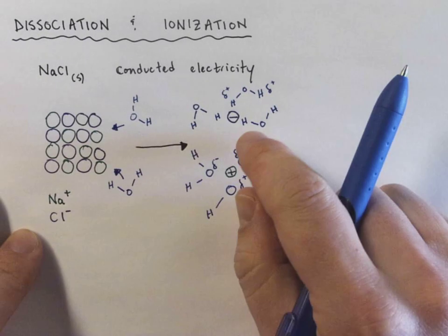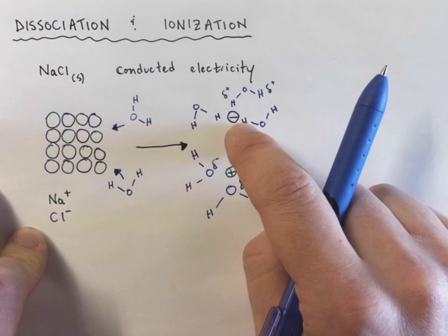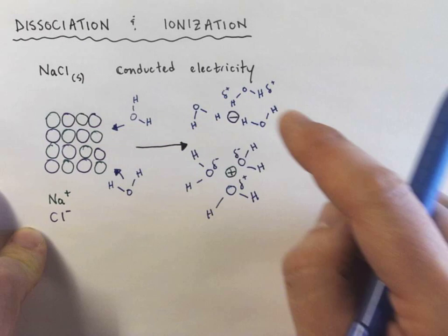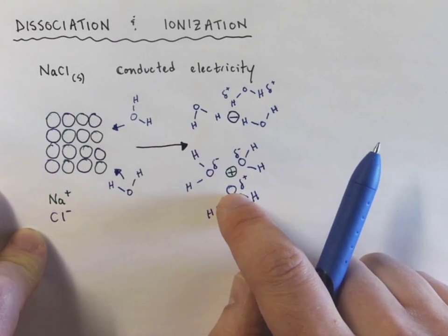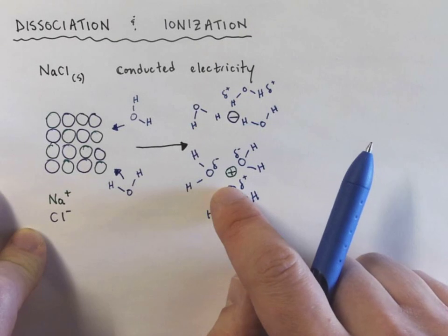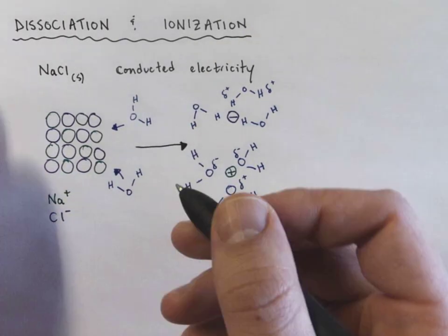So hopefully you can see the difference. The slightly positive hydrogens of water are attracted to the negative chloride ions, and the slightly negative ends of the water molecule occupied by oxygen orient themselves towards the positive sodium ions.